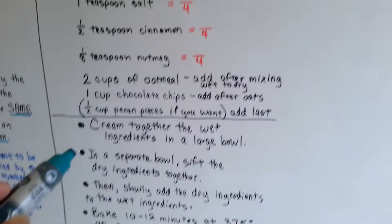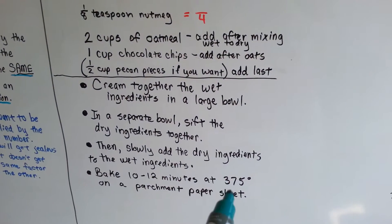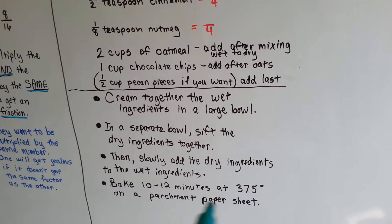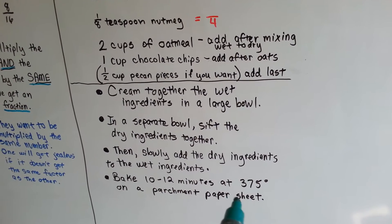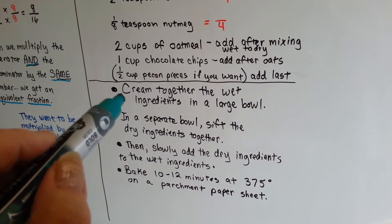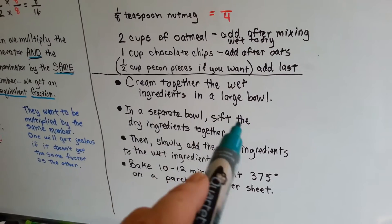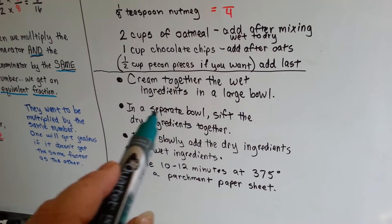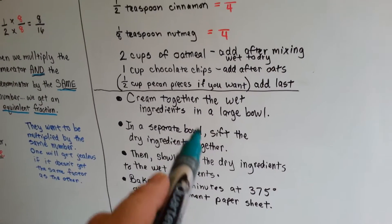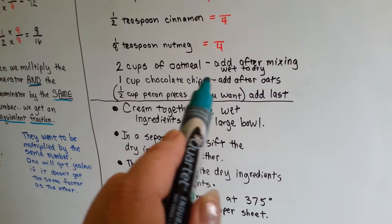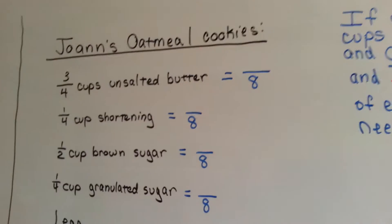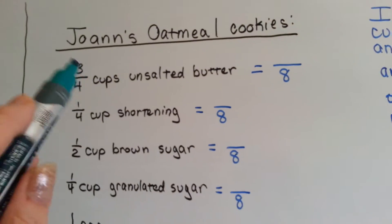You need to preheat the oven to 375, because the cookies are going to bake for 10 to 12 minutes at 375. We want to put them on a cookie sheet on parchment paper once we go to bake them. It says we need to cream together the wet ingredients in a large bowl, and then in a separate bowl we have to sift the dry ingredients together. Then we slowly add the dry ingredients to the wet ingredients. Sugar is considered wet because it mixes with the butter.